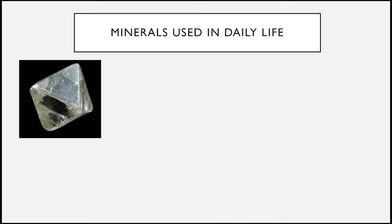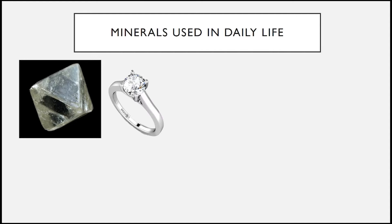Also, minerals are important to humans because we use them in some of our daily routines. Here is an example of a mineral known to be the hardest mineral on earth, also known as the diamond. This example of diamond is uncut — a raw image of a diamond. Diamonds are known for their hardness and we usually use them in jewelry like rings, earrings, and necklaces.